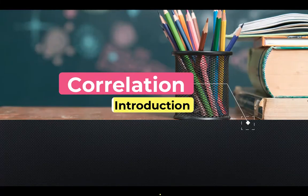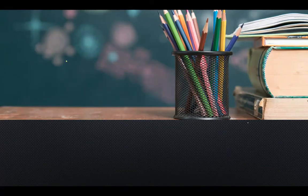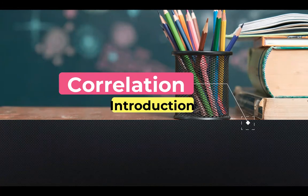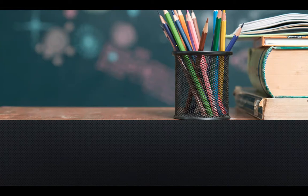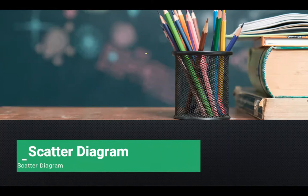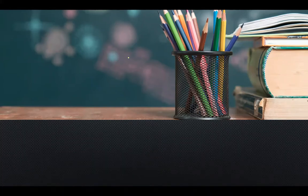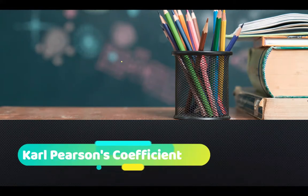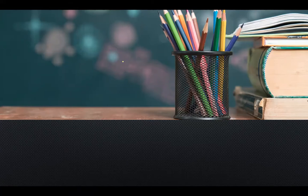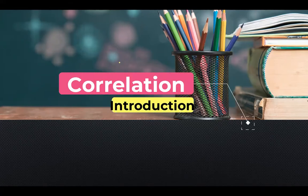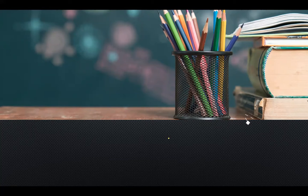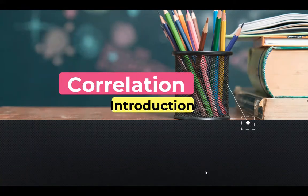In this video, we are going to study about correlation — what are the types and what methods are used to describe correlation. We are going to cover an introduction first, and then in the next coming videos we will cover Pearson's coefficient of correlation, Spearman's rank correlation, and the method of least squares. These are the three things we are going to study in this correlation chapter.